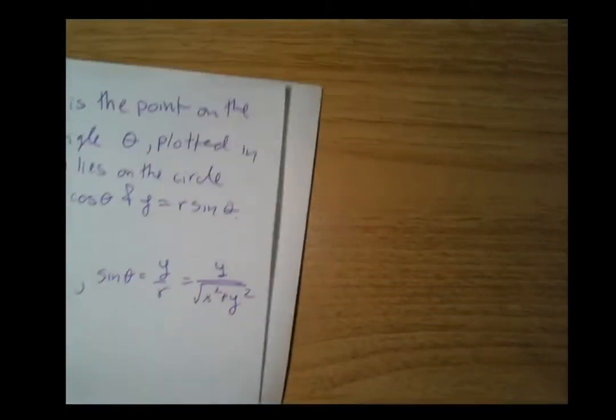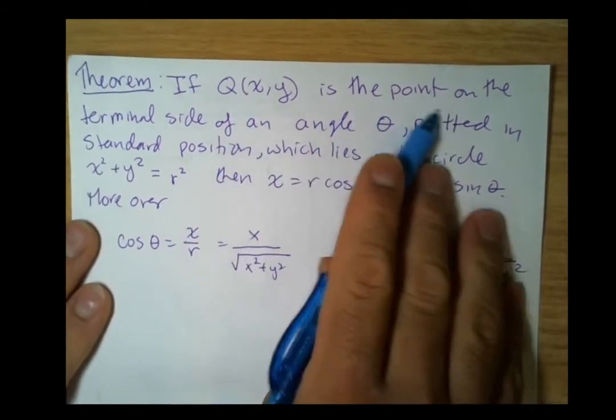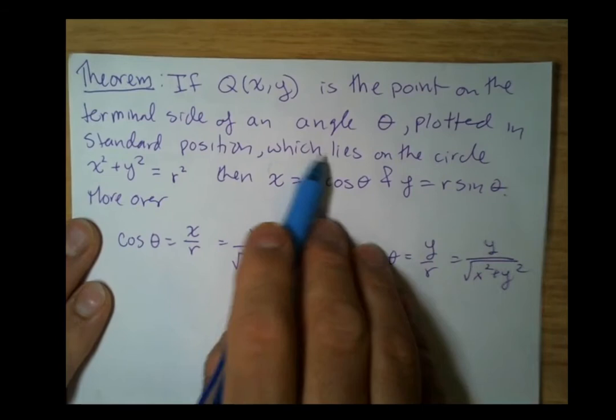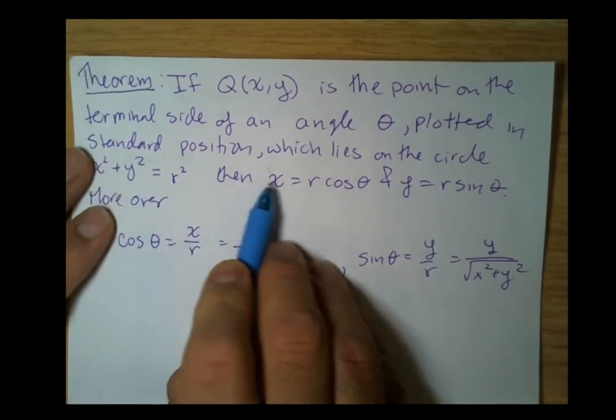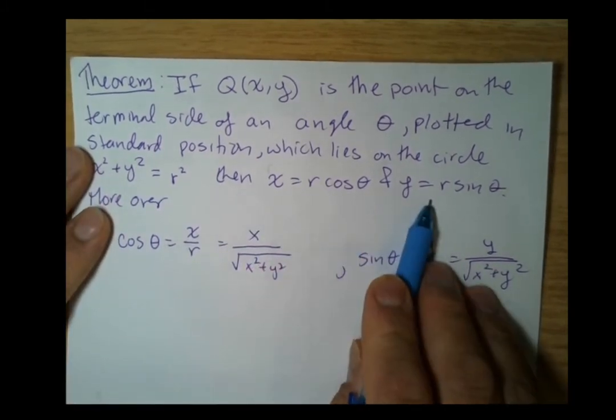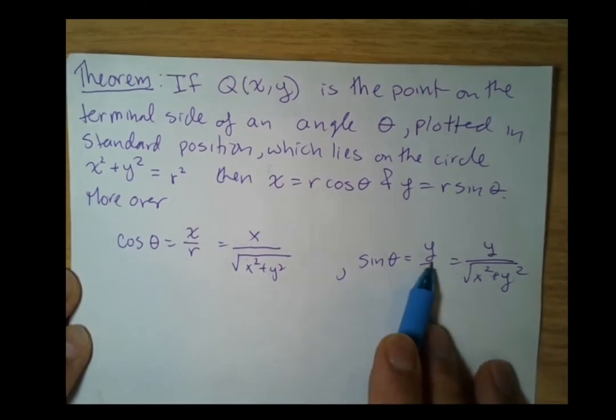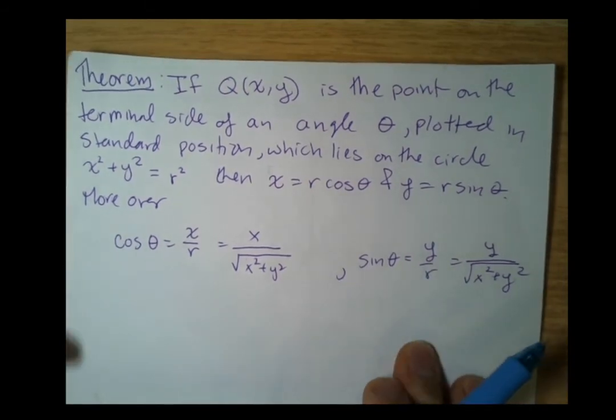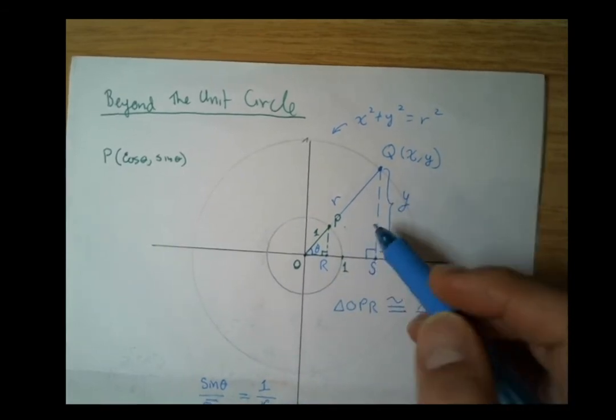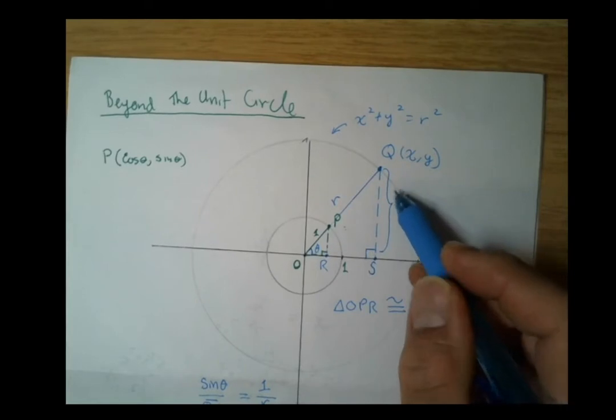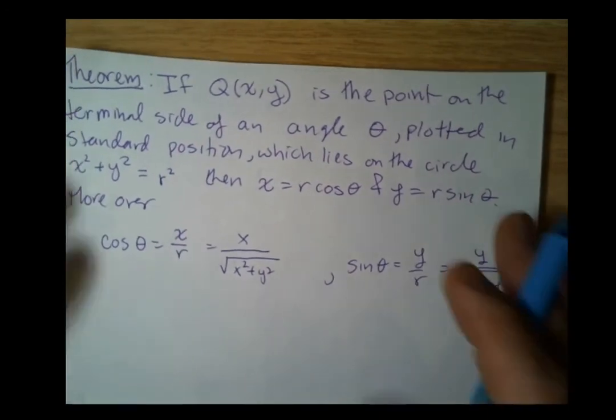This brings us to our theorem: If Q(x, y) is a point on the terminal side of an angle theta plotted in standard position, which lies on the circle x² + y² = r², then x = r cos θ and y = r sin θ. Moreover, cos θ = x/r and sin θ = y/r, as illustrated in our drawing.